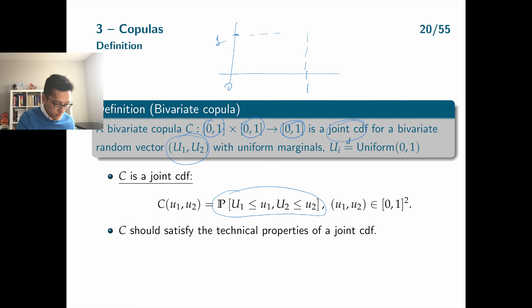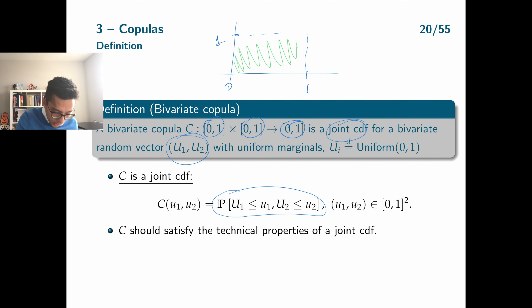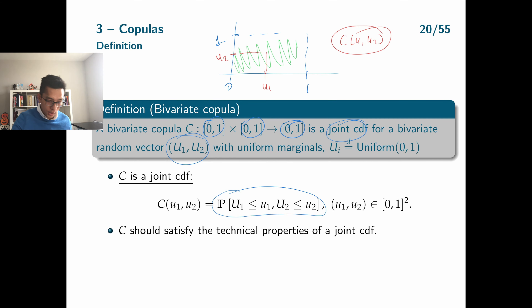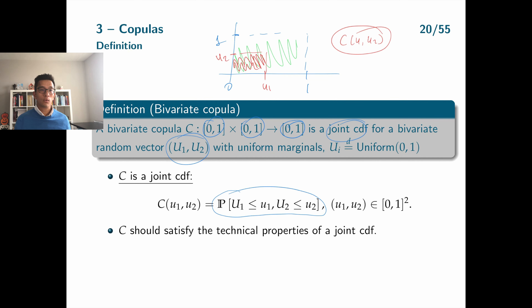A copula function C maps each value in this unit square to a probability. For given u1 and u2, the copula C(u1, u2) gives the probability that the random vector (u1, u2) takes values in the corresponding region. Because it is a joint CDF, it is simply that probability, and hence it gives you probabilities.